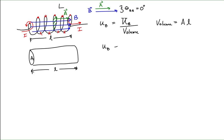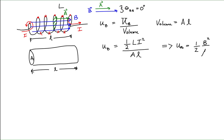To find the magnetic potential energy density, we use the expression previously derived for magnetic potential energy, which is equal to one-half times the inductance of our inductor times the square of the current passing through the inductor, and this is divided by the product of the area times the length, which is the volume of the inductor. Our goal is to show that this expression is equivalent to one-half times the magnitude of the magnetic field squared divided by the permeability of free space. We already have a one-half, but we need to express the inductance, the current, the area, and the length in terms of the magnetic field and the permeability of free space.